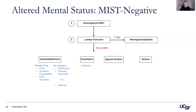Psychiatric diseases include catatonia. And now to touch on those special strokes that can present with an isolated change in mental status — these include brainstem strokes, thalamic strokes, non-dominant parietal lobe strokes, as well as frontal lobe strokes.